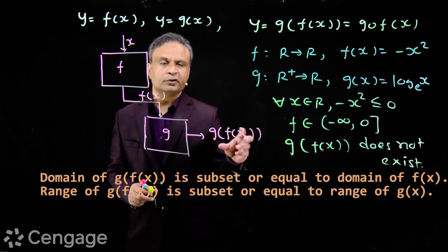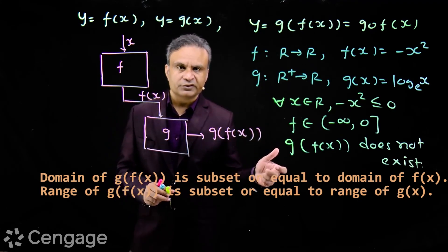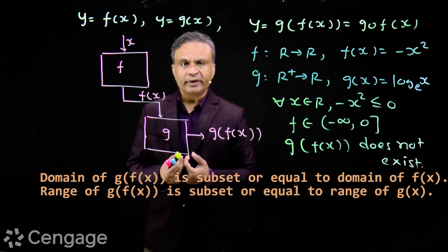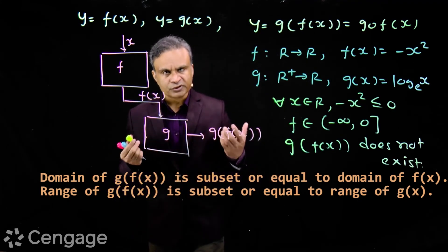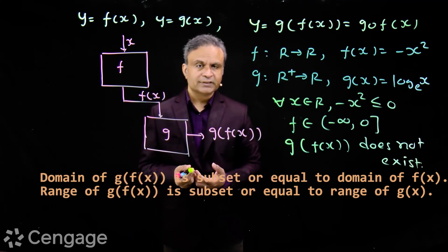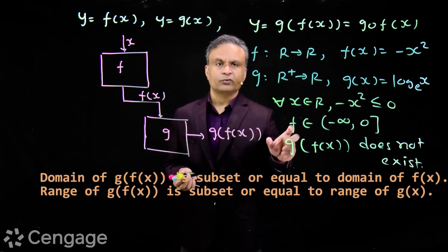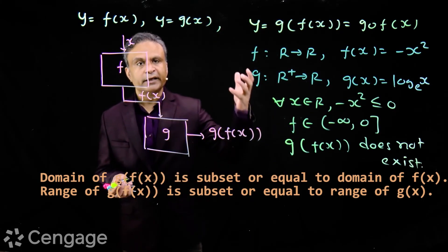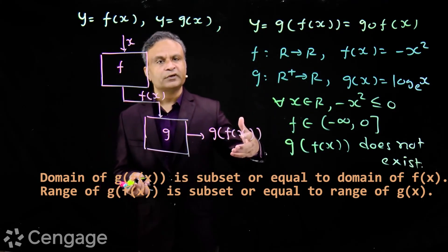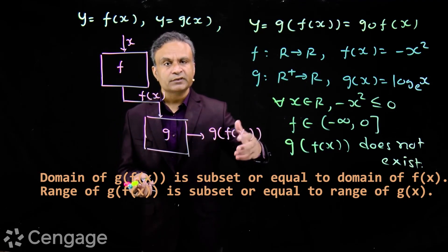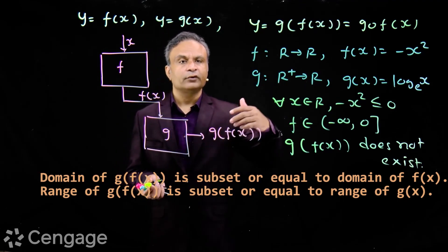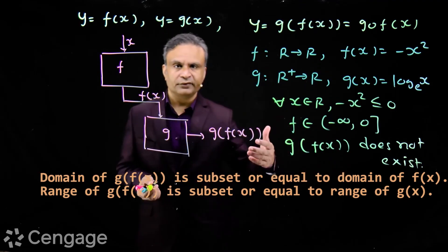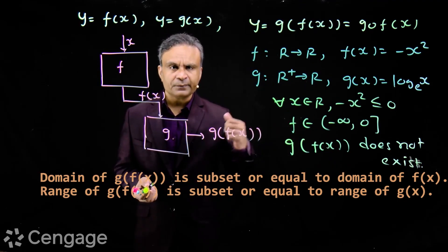From these three examples we learn: the domain of g(f(x)) is a subset of or equal to the domain of function f(x). In general, the domain of a composite function is a subset of or equal to the domain of the inner (first) function, and the range of the composite function is a subset of or equal to the range of the outer (second) function.